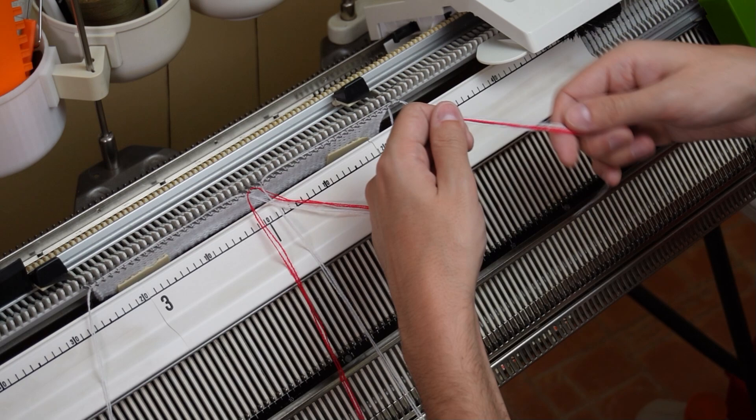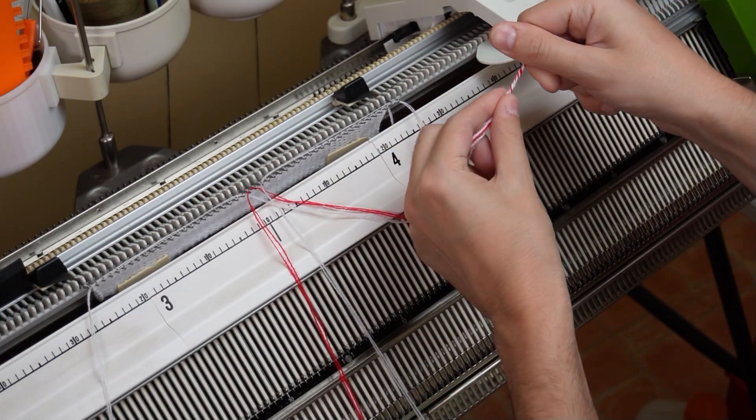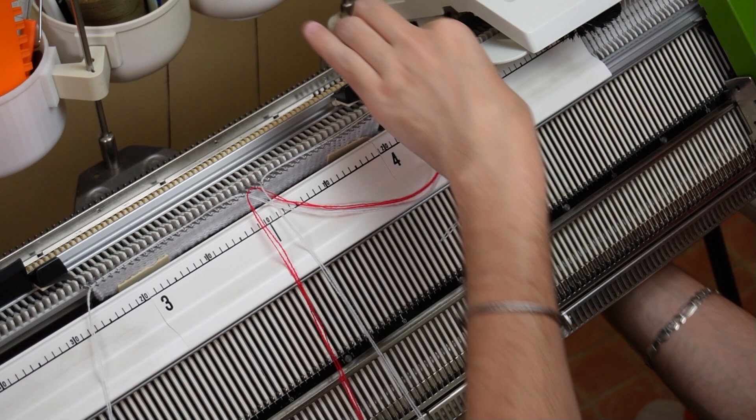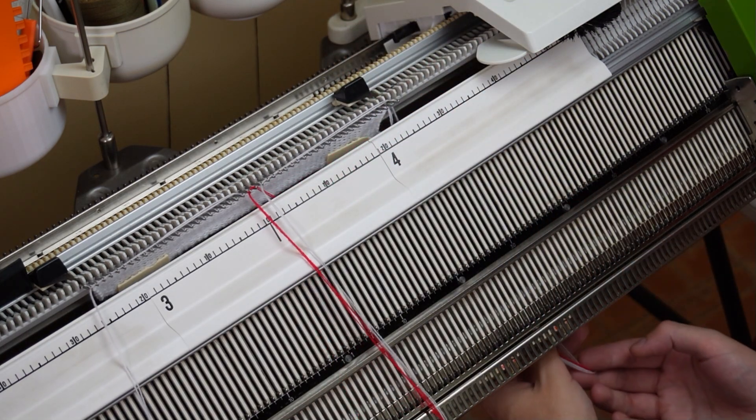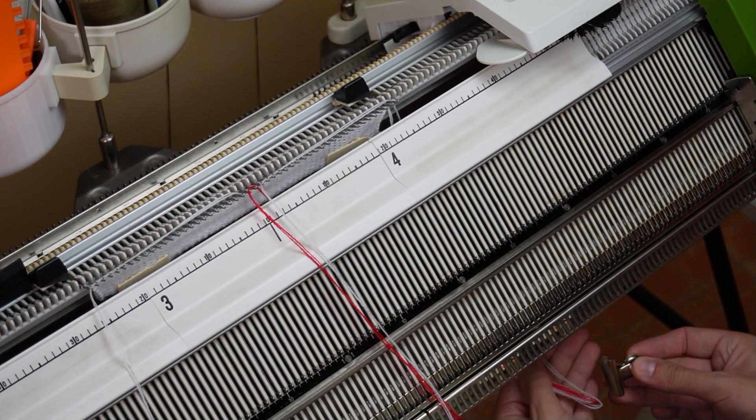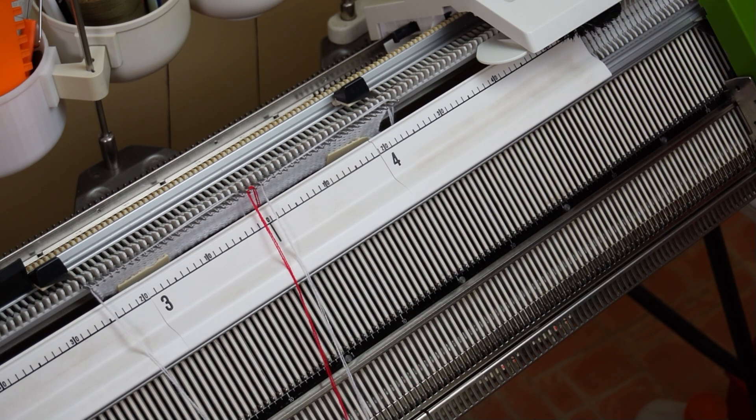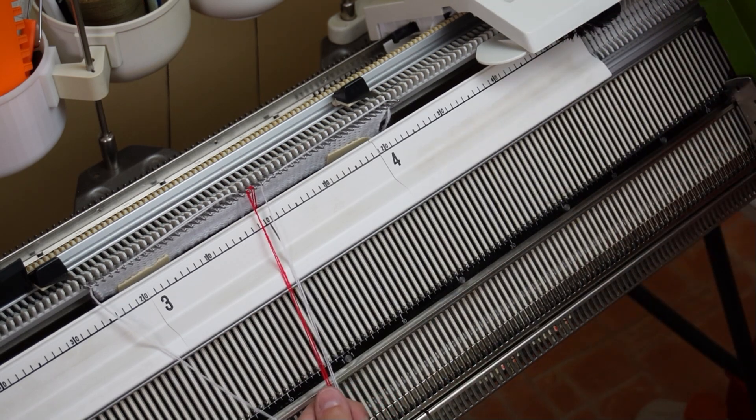Now I will twist the ends and put them between the pads of the machine. I will attach a small metal clip to pull them down. Hold the yarn strands with your hand and knit the first row.